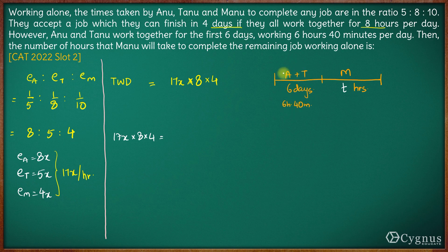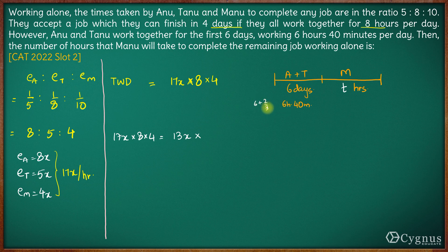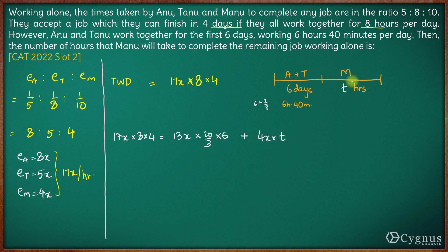The total work done is equal to the work done by Anu and Tanu — combined efficiency 13x multiplied by 20/3 hours per day multiplied by 6 days — plus the work done by Manu, which is efficiency 4x multiplied by t hours.